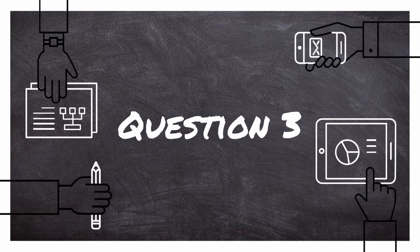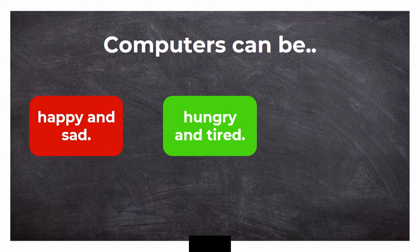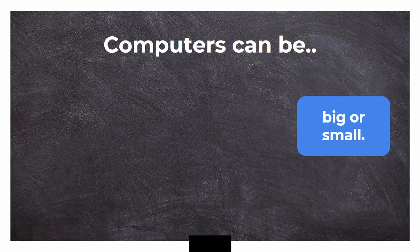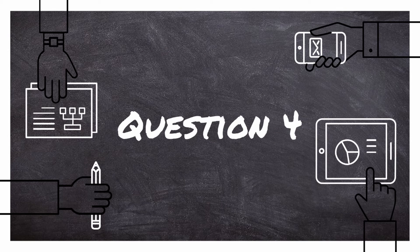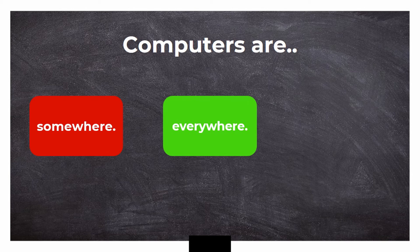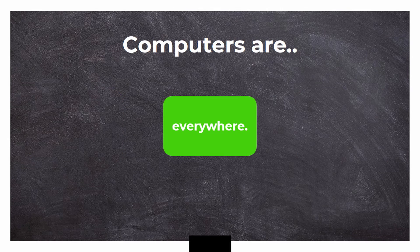Question number three: Computers can be happy and sad, hungry and tired, or big or small. What's your answer? Computers can be big or small. Question number four: Computers are somewhere, everywhere, or nowhere. What's your answer? Computers are everywhere.